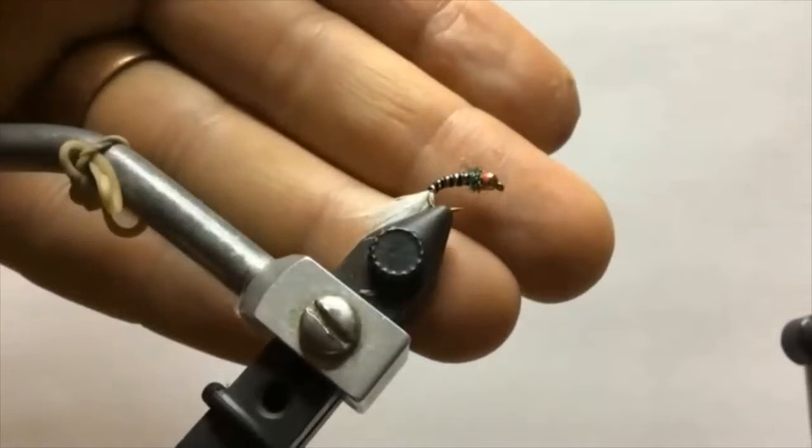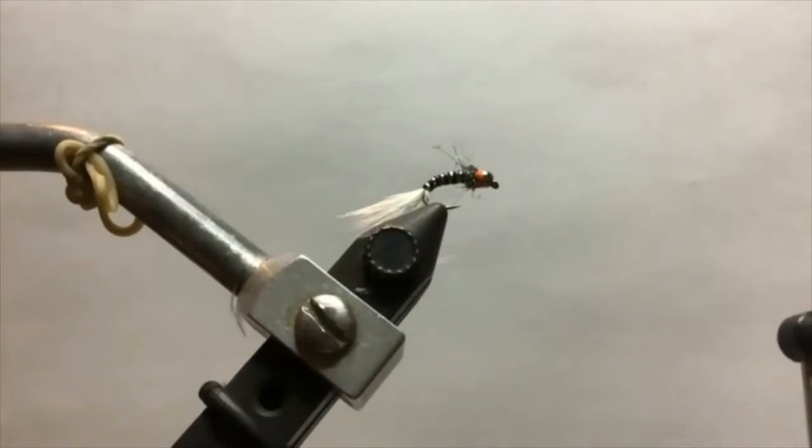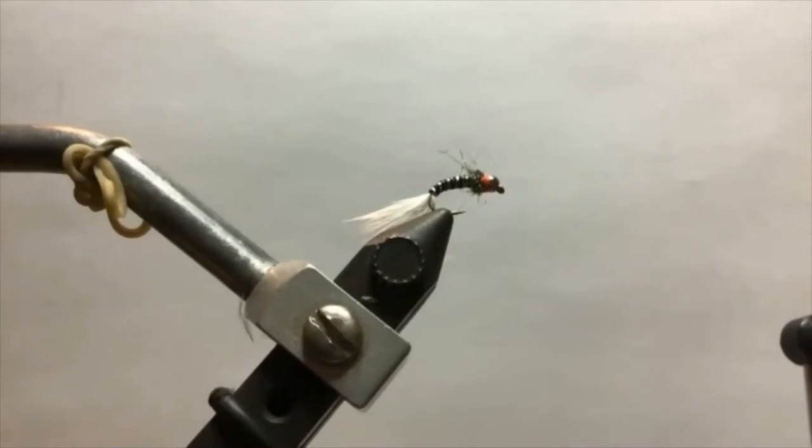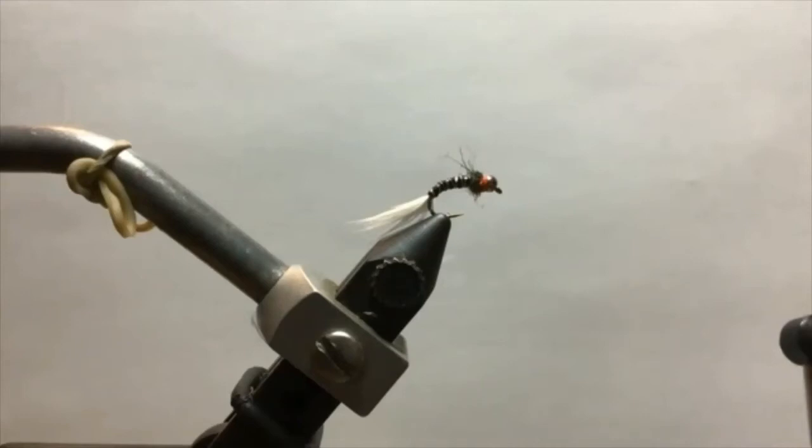There you go. Nice bright hot spot on there. It's going to be really resilient because you've counter-wrapped it with that wire. That's a deadly, deadly little midge. It's got some good movement in the water. I think it's a nice attractor. It's got all those classic parts - a nice thorax built onto it, that black and white zebra midge color that's so effective. So yeah, those are the two patterns I had for you this evening. What questions do we have on that one?